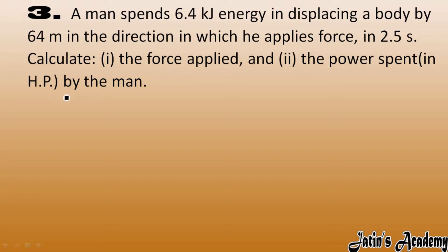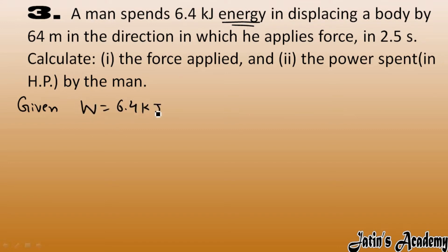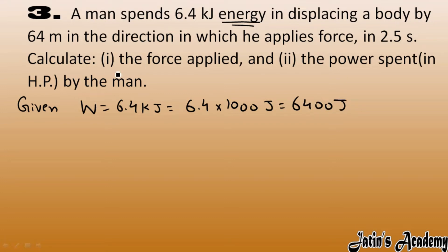First, write the given quantities. A man spent 6.4 kilojoules of energy — energy means work done — so work done is 6.4 kilojoules. Convert it into joules by multiplying by 1000, so we get 6400 joules as the work done. Displacement is given as 64 meters.